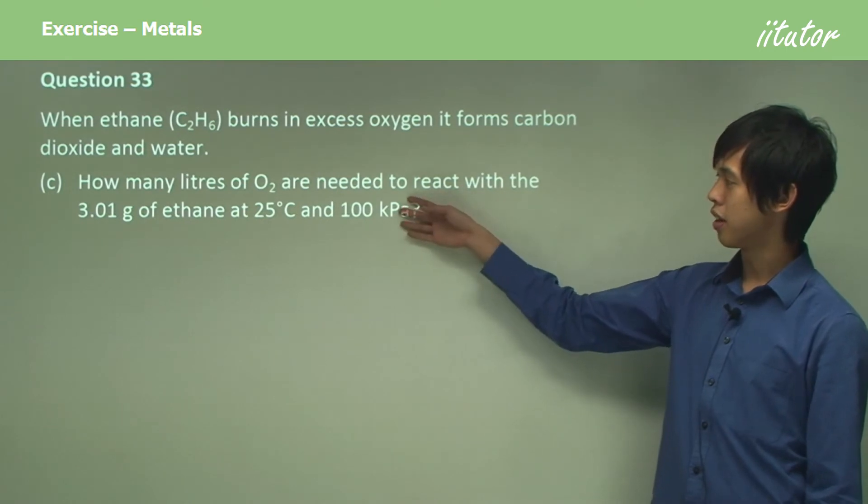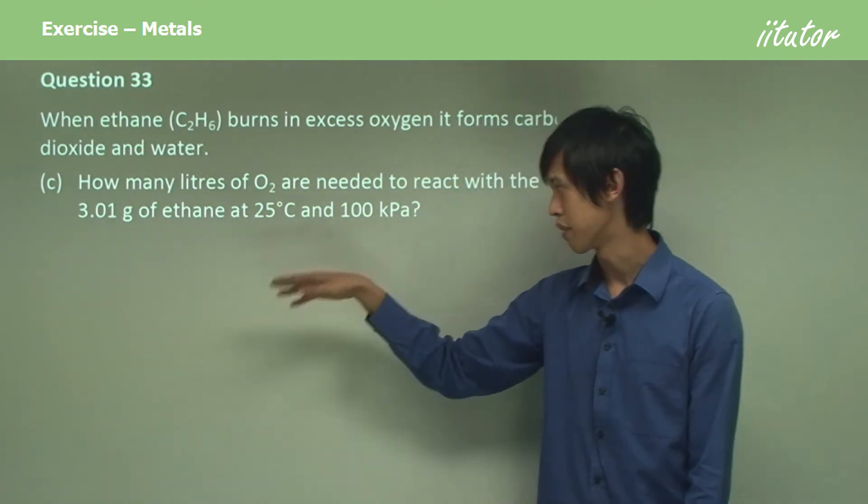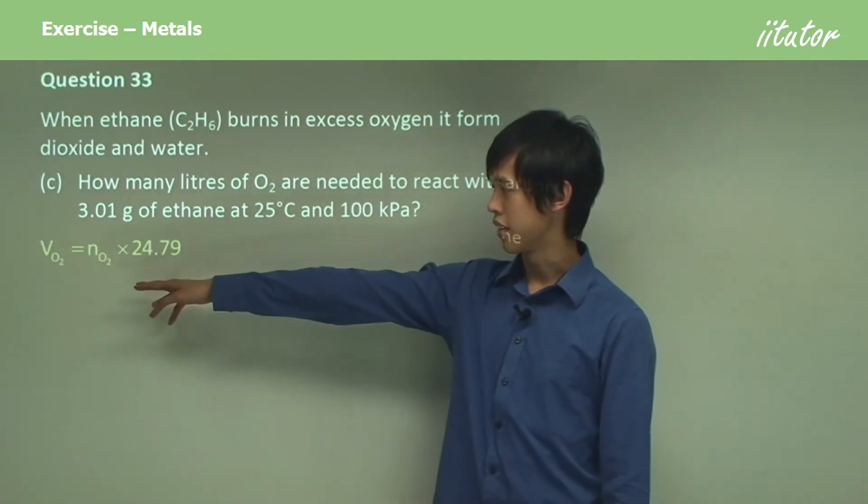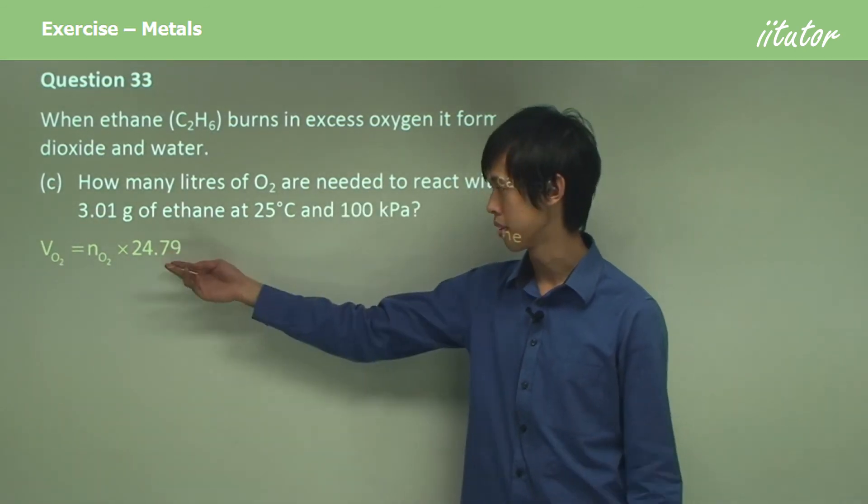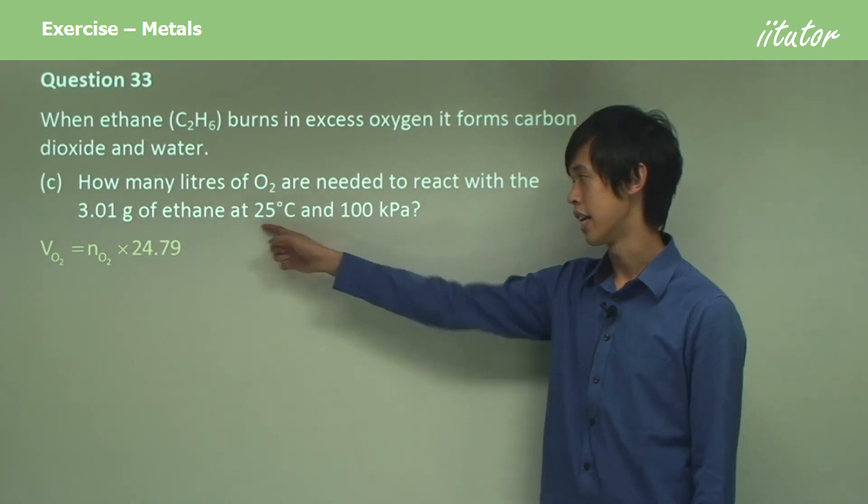How many liters of O2 are needed to react with the 3.1 grams of ethane at 25 degrees Celsius and 100 kilopascals? Well, all we have to do is just multiply the number of moles of oxygen by the amount of volume that one mole of gas takes up, which is 24.79. Again, you can look up on the back of your periodic table at these conditions.